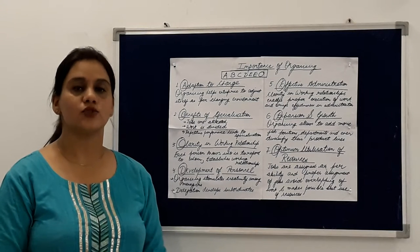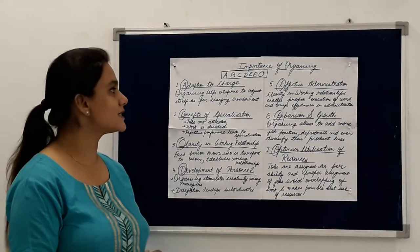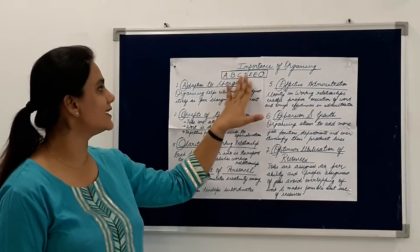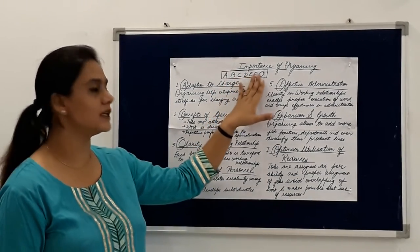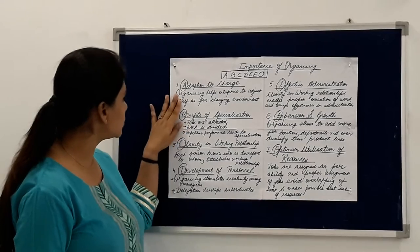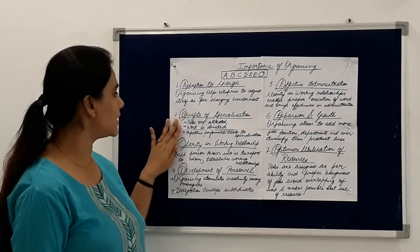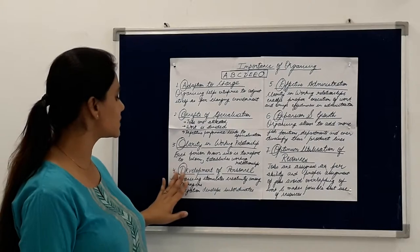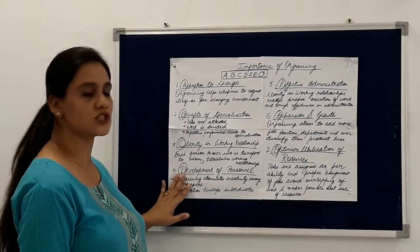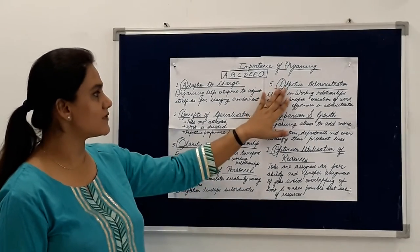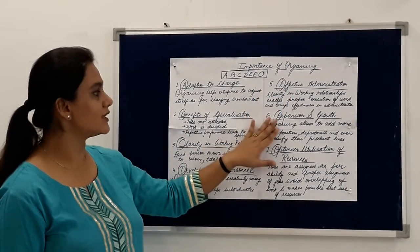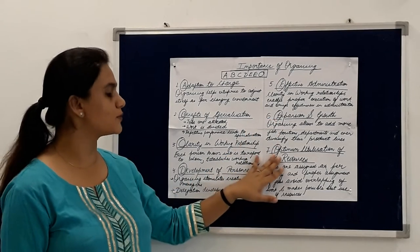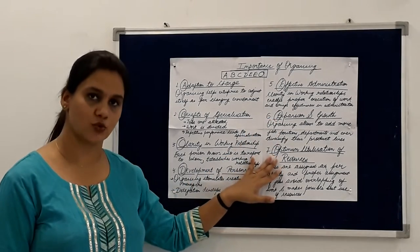In order for easy learning I have created a very easy shortcut: A, B, C, D, E, O. A for adaption to change, B for benefits of specialization, C for clarity in working relationships, D for development of personnel, E for effective administration, E for expansion and growth, and O for optimum utilization of resources.